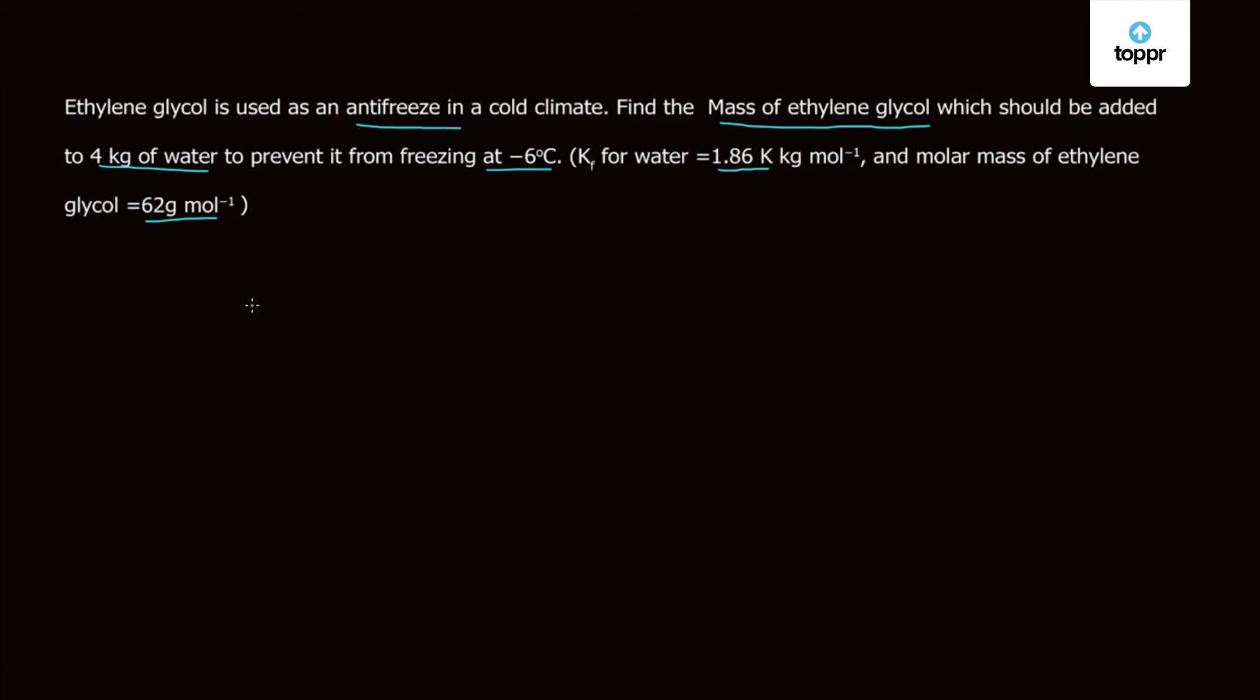As we know from the formula, delta Tf, that is decrease in freezing point, is equal to Kf times M, where Kf is the freezing point depression constant and M is moles of solute per kg of solvent.